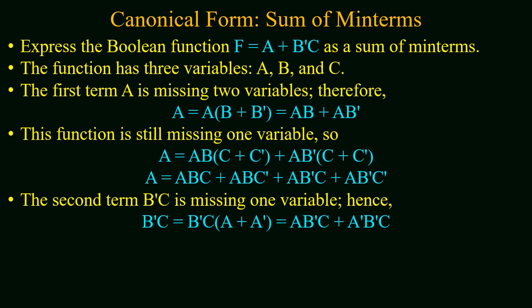For the given example, function f = a + b'c, we have to express the function as a sum of minterms. The function overall consists of 3 variables: a, b, and c. The first term has 2 variables missing, and in the second term 1 variable is missing. So we will introduce the missing variables in each term.